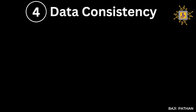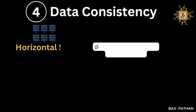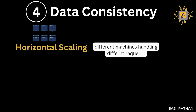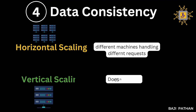The next factor is data consistency. For horizontal scaling, different machines handle different requests, which may lead to data becoming out of sync. Whereas in vertical scaling, we will not have this issue because all the data resides in a single machine.